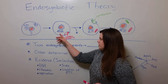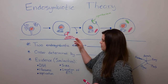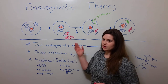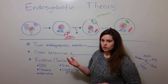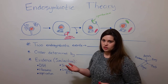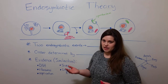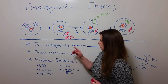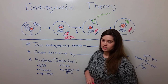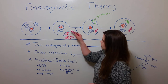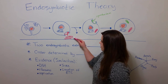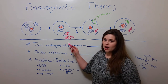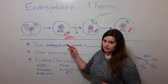Then, one of these early cells engulfed an aerobic bacteria. Aerobic simply means that it's capable of carrying out aerobic respiration, which involves using oxygen to make ATP, which is the major energy currency of the cell. So here we have this early cell that engulfs this aerobic bacterium, most likely through some kind of phagocytosis event.